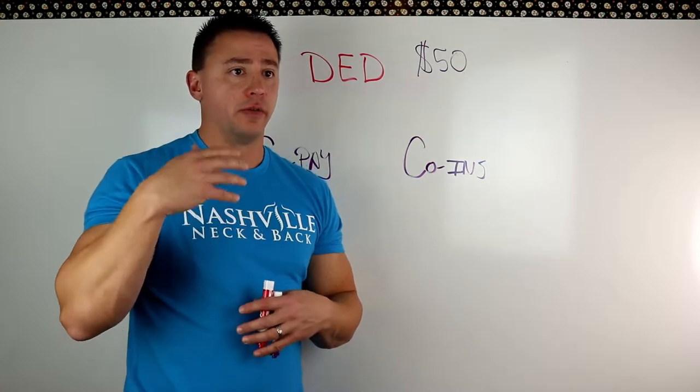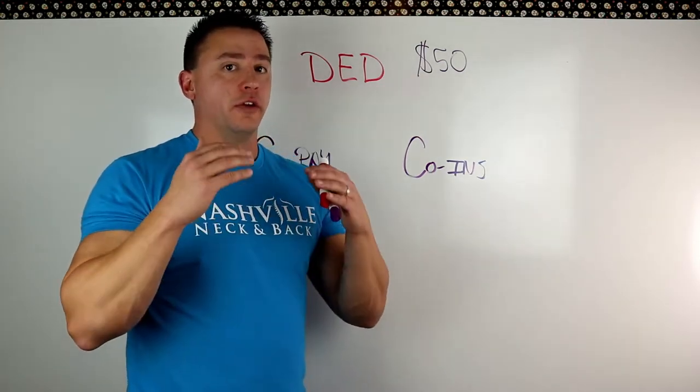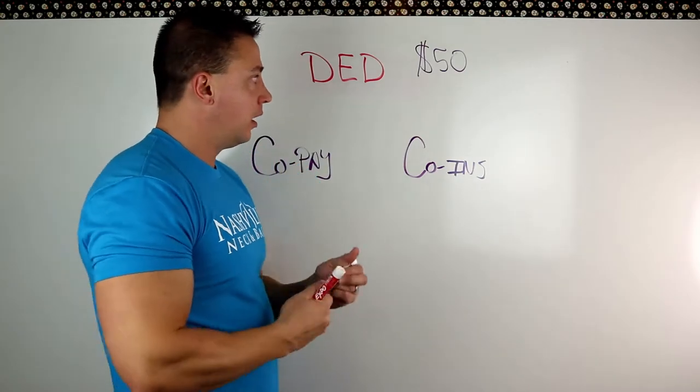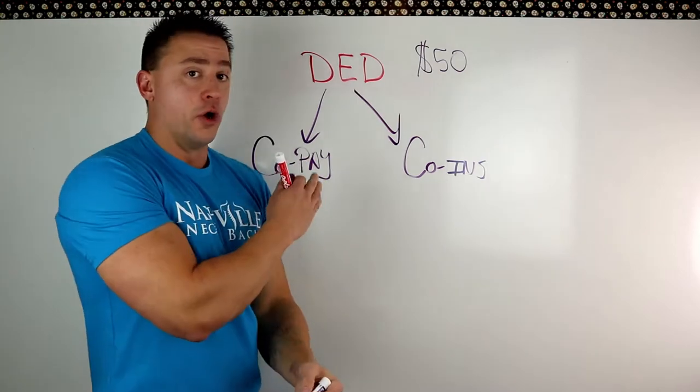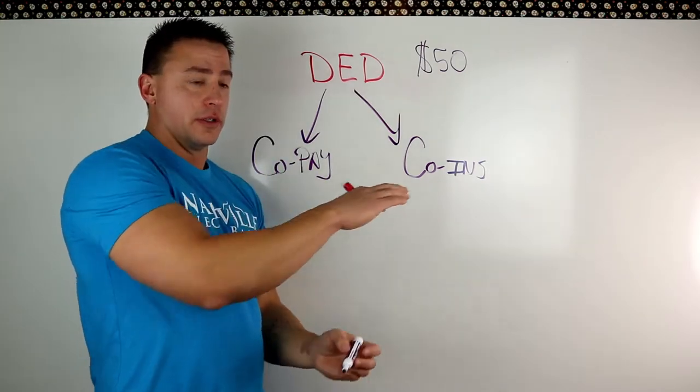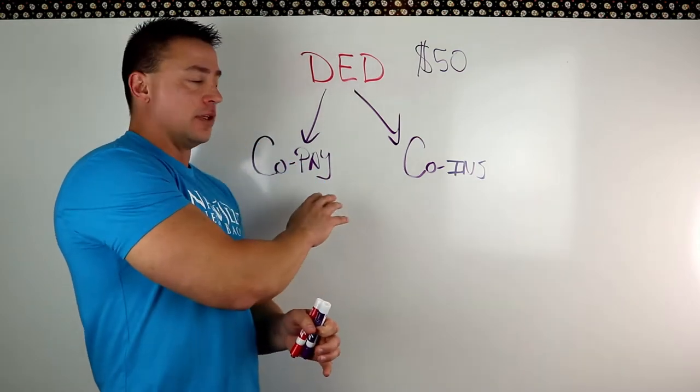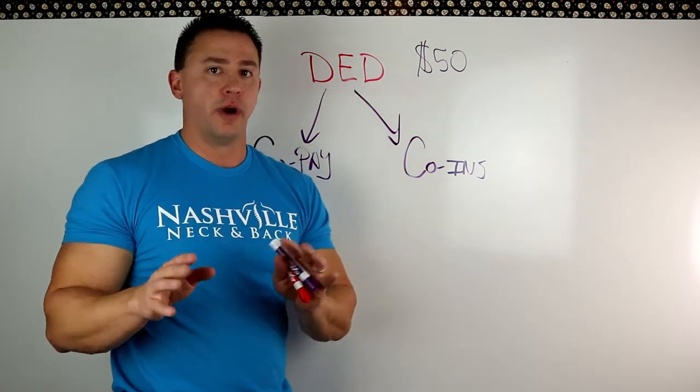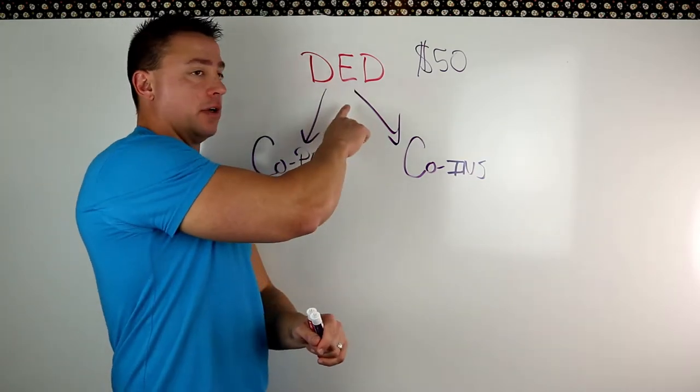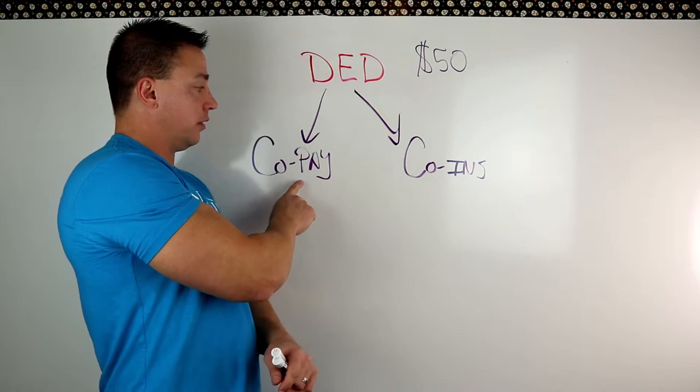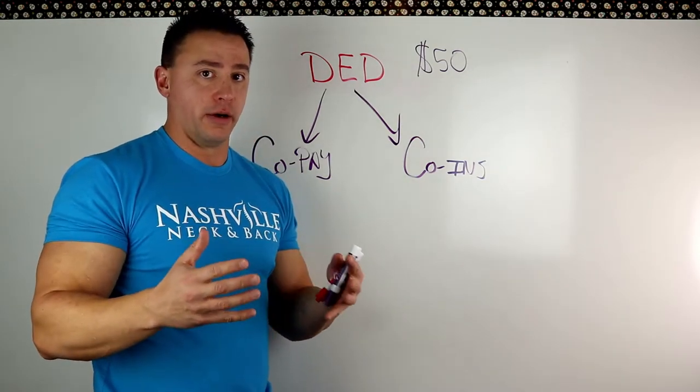Once you meet your deductible, say you've gone, you've had a lot of bills, or you've gone and gotten a lot of treatment, and you've met your deductible, then it drops down to either your co-pay or your co-insurance. And it's usually one or the other. Some rare instances, a patient's insurance has both a co-pay and a co-insurance, but guys, it's so rare, we're not even going to talk about it today. So let's just keep in mind that once you meet your deductible, again, it's going to drop down to your co-pay or your co-insurance is what you're going to pay on each visit.